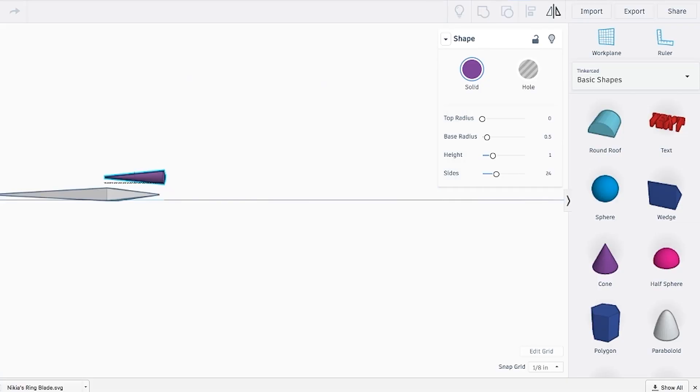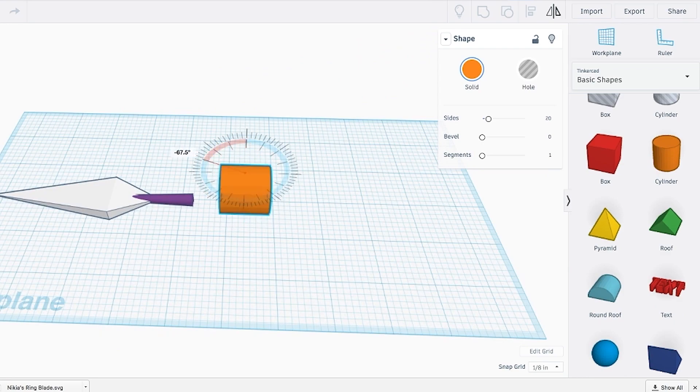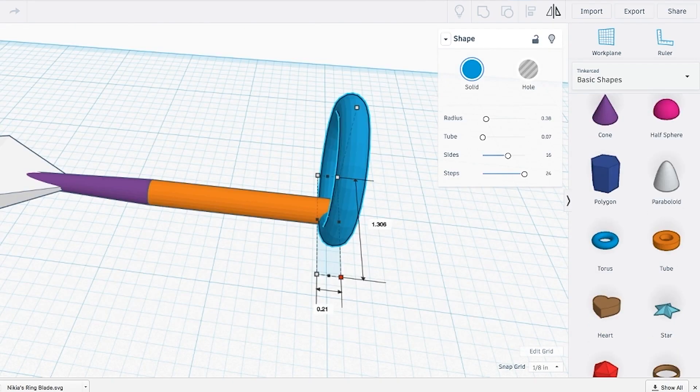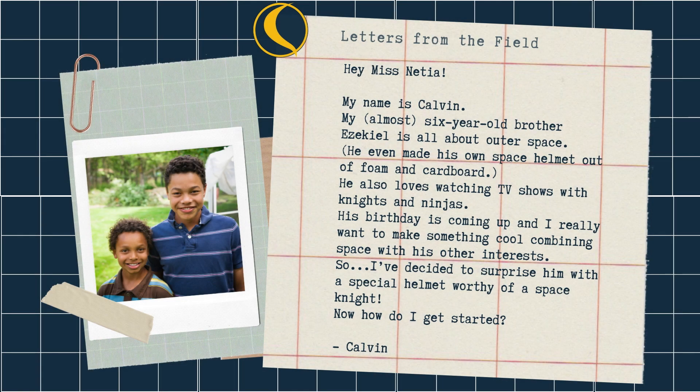Now that we have a few terms under our belt, let's get started. For this video, I've selected an idea from a student of mine, Calvin, to bring to life. Here is what he wrote to us: "Hey, Miss Nisha! My name is Calvin. My almost 6-year-old brother Ezekiel is all about outer space. He even made his own space helmet out of foam and cardboard. He also loves watching TV shows with knights and ninjas. His birthday is coming up and I really want to make something cool, combining space with his other interests. So I decided to surprise him with a special helmet worthy of a space knight. Now, how do I get started?"